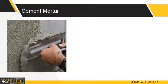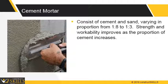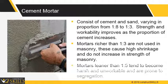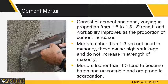Cement Mortar: These consist of cement and sand, varying in proportion from 1:8 to 1:3. Strength and workability improve as the proportion of cement increases. Mortars richer than 1:3 are not used in masonry because they cause high shrinkage and do not increase the strength of masonry. Mortars leaner than 1:5 tend to become harsh and unworkable and are prone to segregation. Cement mortars set early and gain strength.